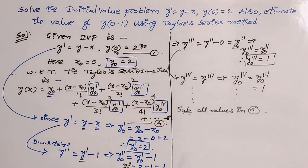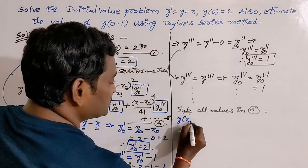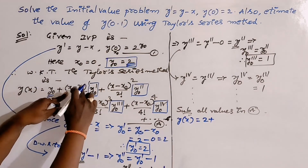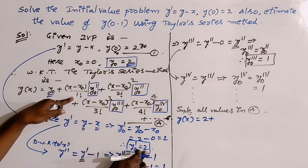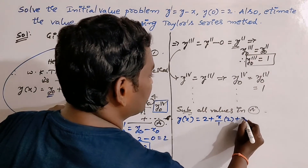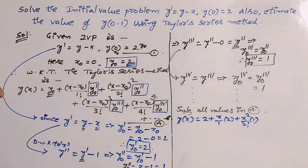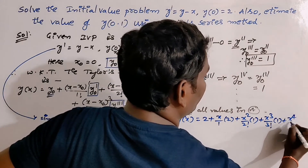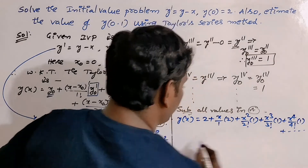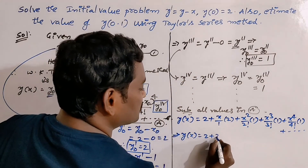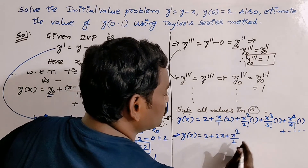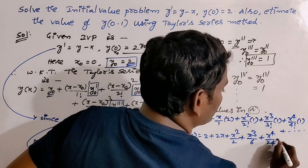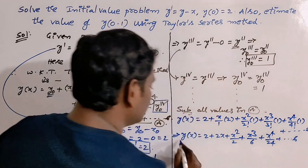Substituting into the Taylor series: y(x) = 2 + (x/1!) · 2 + (x²/2!) · 1 + (x³/3!) · 1 + (x⁴/4!) · 1 + ... So y(x) = 2 + 2x + x²/2 + x³/6 + x⁴/24 + ... up to infinity. This is the required solution of the given initial value problem.